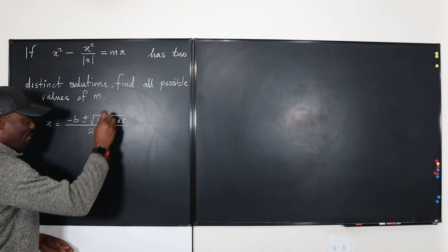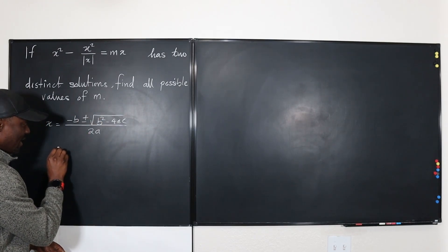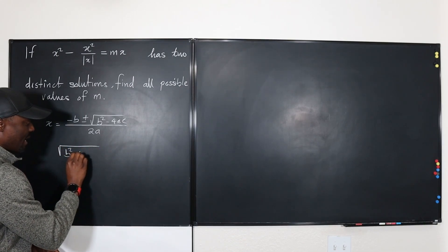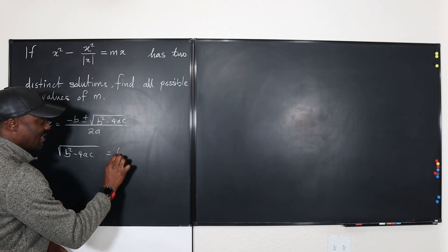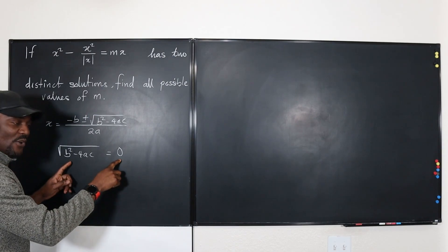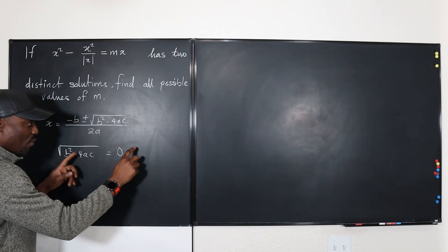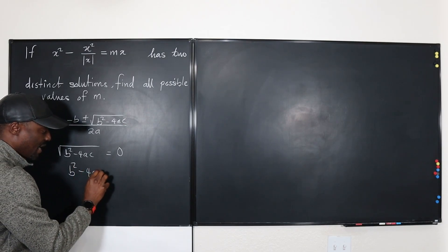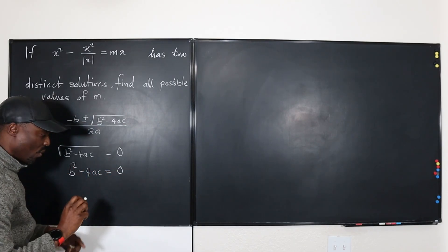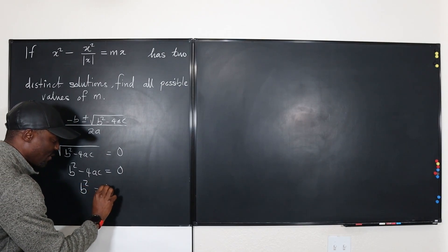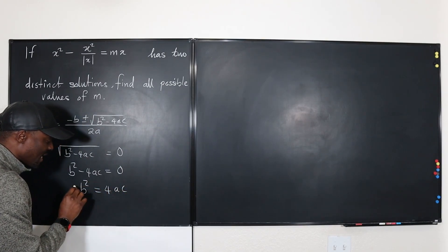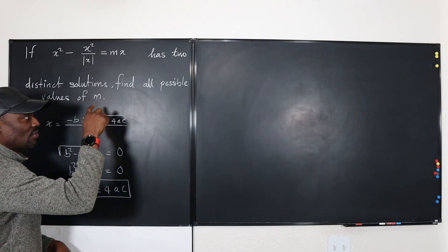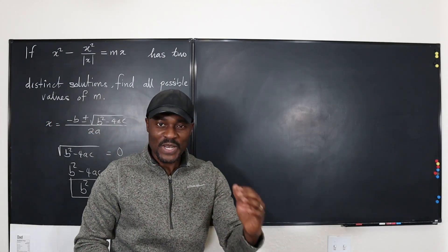The only case in which your answers will not be different is if what you're adding or subtracting is zero — adding nothing and subtracting nothing. That means the square root of b squared minus 4ac is zero, and squaring both sides gives b squared minus 4ac equals zero, or b squared equals 4ac. This is the key to the question.